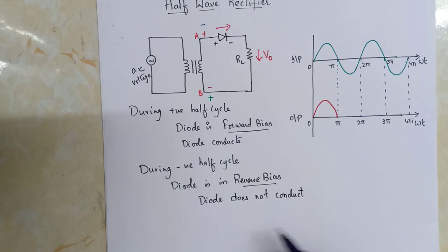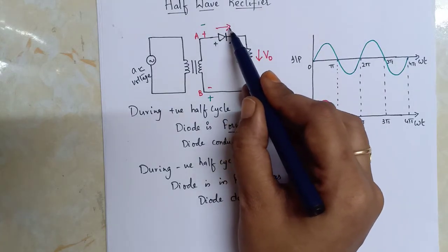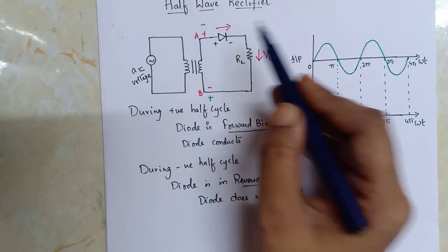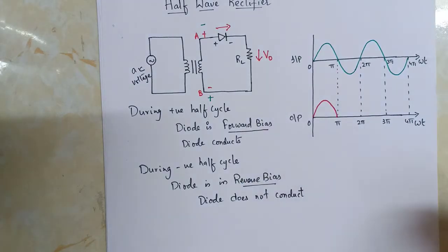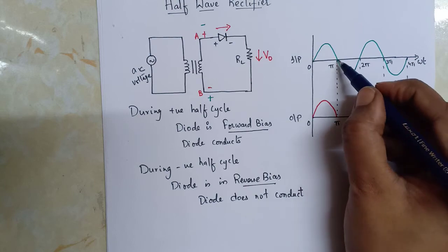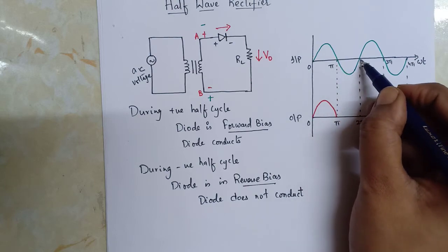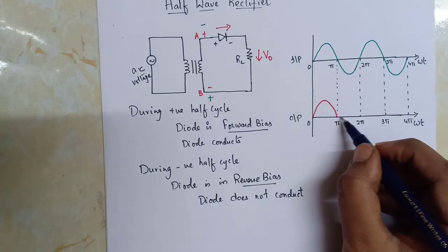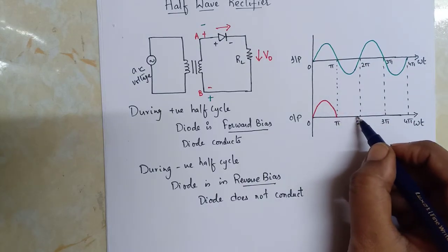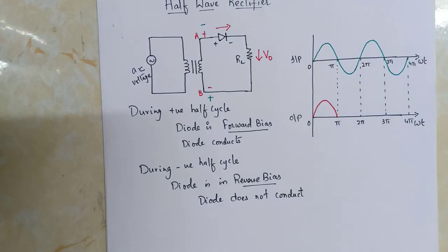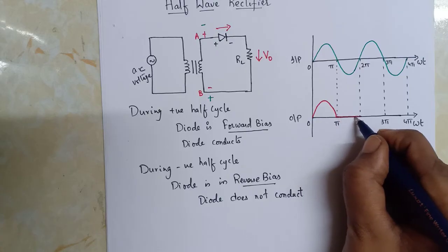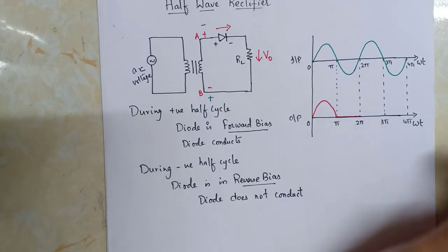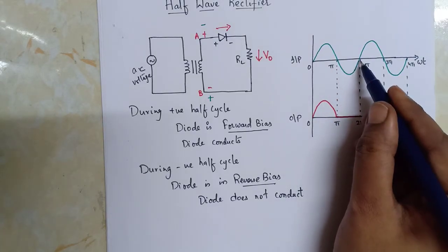When the diode is in reverse bias, it does not allow current to flow through it — that is, the diode does not conduct. That means there will be no flow of current through the diode and there will be no voltage across the load resistance. So during the negative half cycle of the input voltage, I do not see any voltage across the load resistance — the voltage is zero.